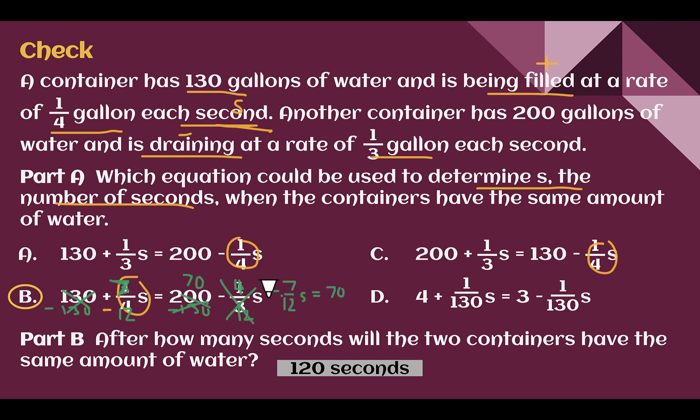And then I would do the reciprocal to get rid of the fraction. So times 12 sevenths. 70 divided by seven is 10. 10 times 12 is 120. So seconds equals 120, which is what they said.